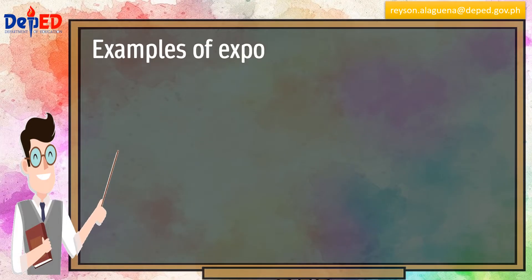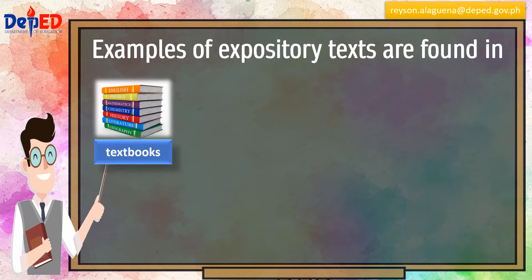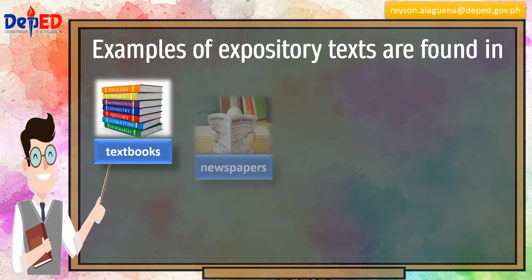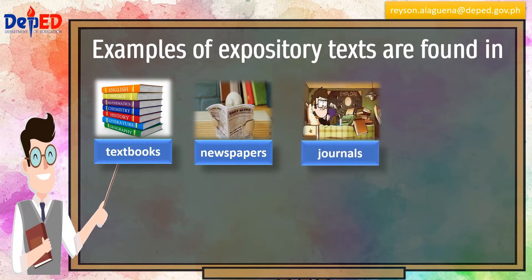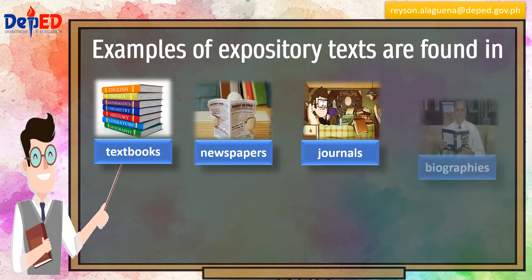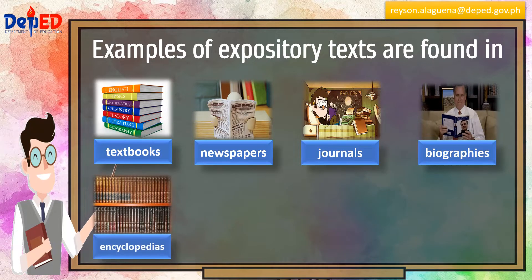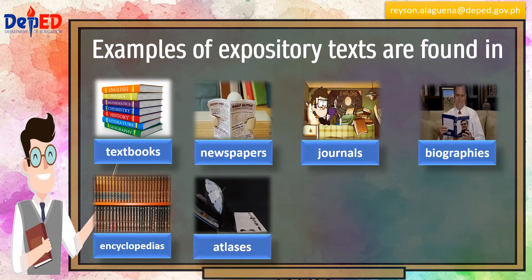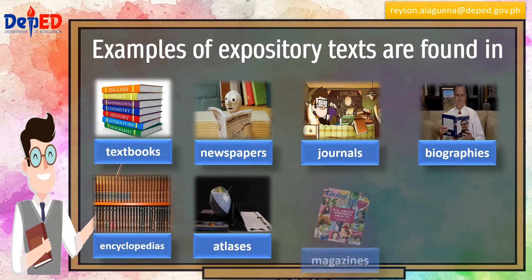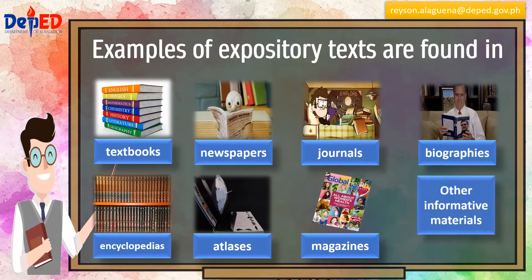Examples of expository texts are found in textbooks, newspapers, journals, biographies, encyclopedias, atlases, magazines, and other informative materials.